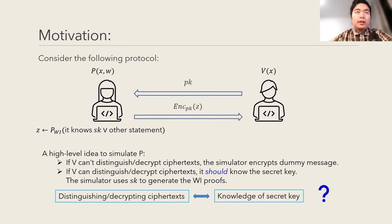First, consider the following simple protocol. Roughly, the verifier sends the public key to the prover, and the prover will encrypt its ZK proof proving that it knows the secret key or some other statements. That's a toy example and here, we only concentrate on simulating the prover.